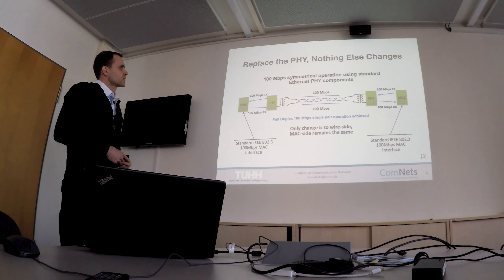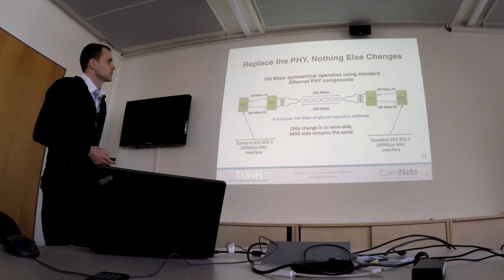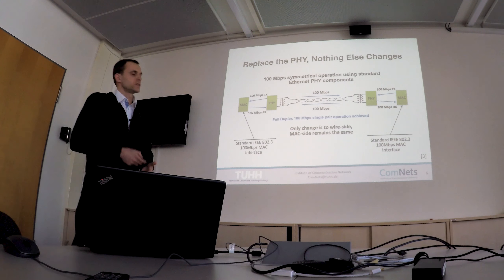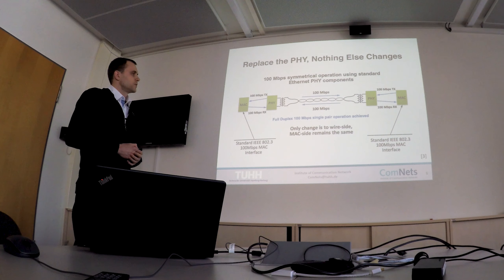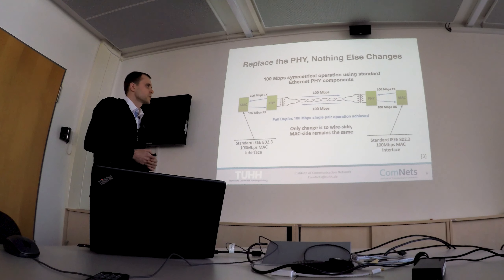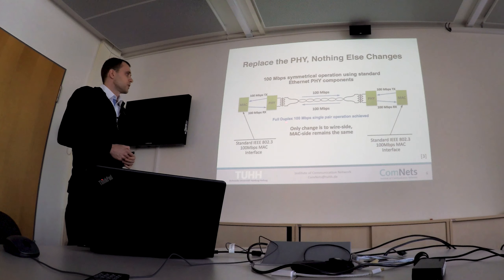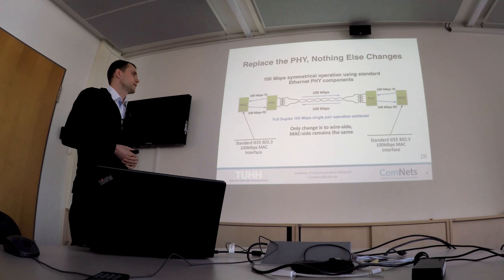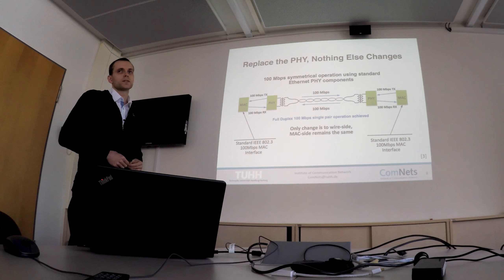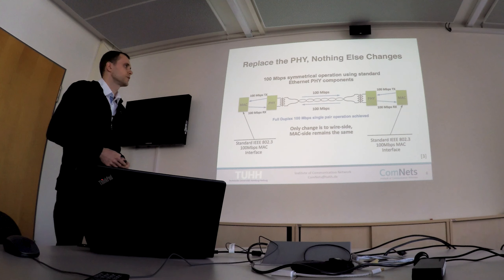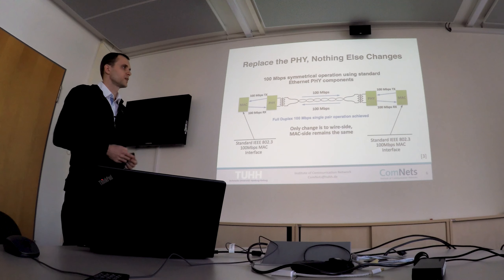What is Automotive Ethernet in a nutshell? Basically, only the physical layer is changed. The physical layer consists of one unshielded single twisted pair cable and provides a full-duplex 100 megabit communication link. All other layers can basically stay the same as in normal Ethernet-based communication.